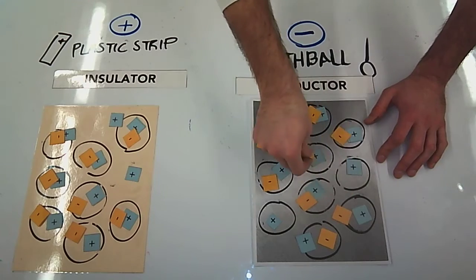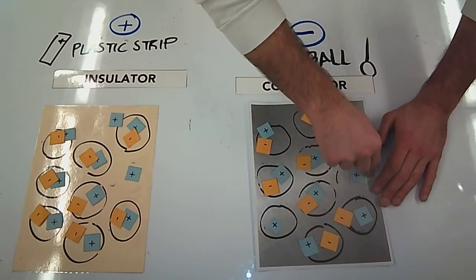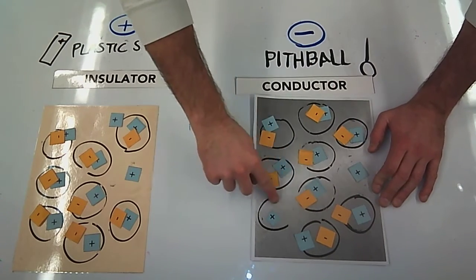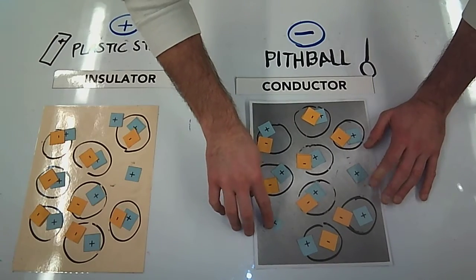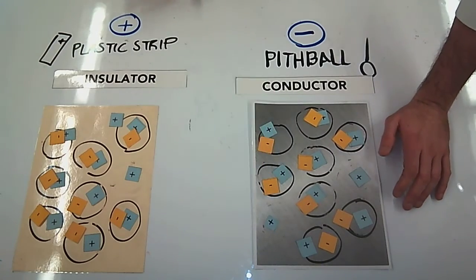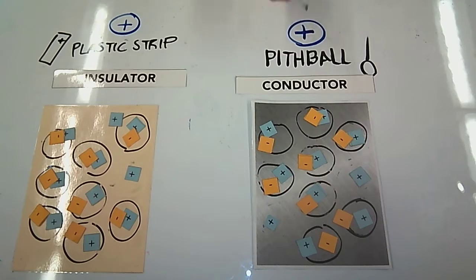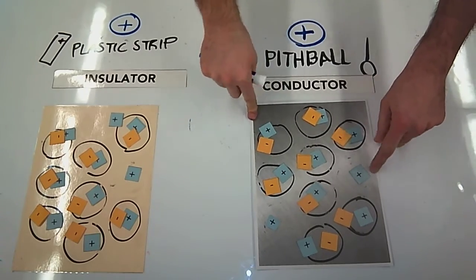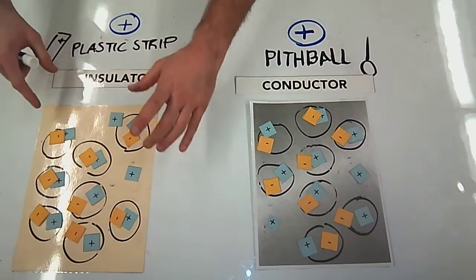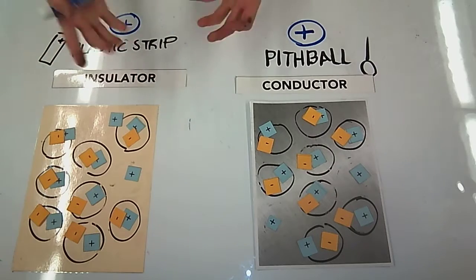So maybe I have this atom right here have a missing electron, and this atom right here having a missing electron. So in this case, both of them are positively charged. But in this case, the positive charge is distributed through my whole object. Here, my positive charge is localized.